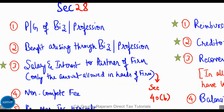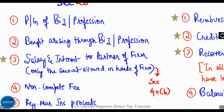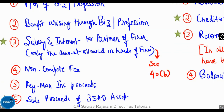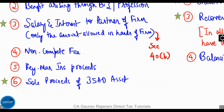Remember that only the amount allowed in the hands of the firm will be considered under this clause. To see what is allowed in the hands of the firm, do check out my disallowances video and look at Section 40 clause B. The fourth one is non-compete fee. The fifth one is keyman insurance proceeds. The sixth one is sale proceeds of a Section 35AD asset.